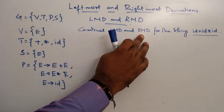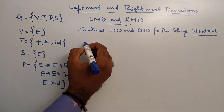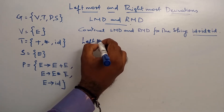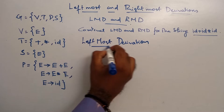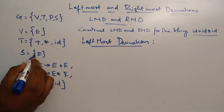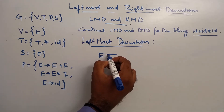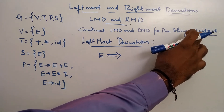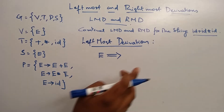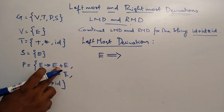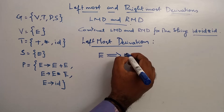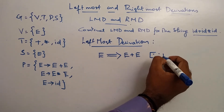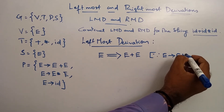Leftmost and rightmost derivation for the string. First, leftmost derivation. Leftmost derivation: starting production is E. For the derivation we use this. The target string is ID plus ID star ID. E tends to E plus E, so we apply this production.